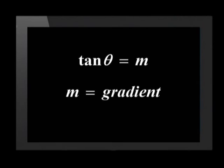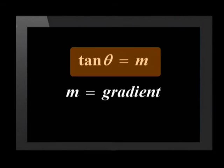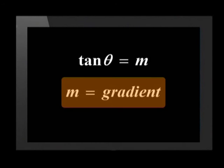Now we know that the inclination of a line is calculated by using tan and the gradient formula. The formula for inclination is tan theta equals m. Remember that m represents the gradient. And don't forget that when the gradient is negative, the angle of inclination must be an obtuse angle.